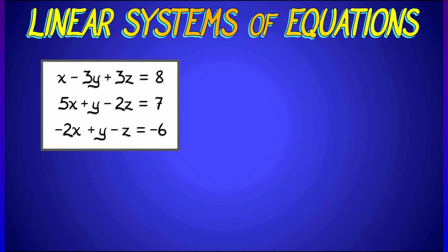Consider the following three linear equations in variables x, y, and z. We have x minus 3y plus 3z equals 8, 5x plus y minus 2z equals 7, and negative 2x plus y minus z equals negative 6.